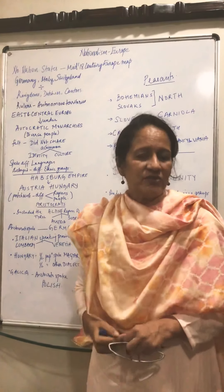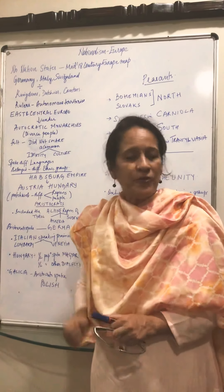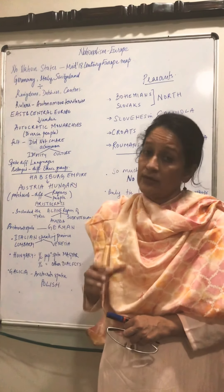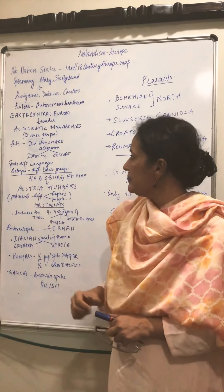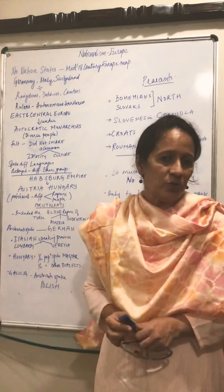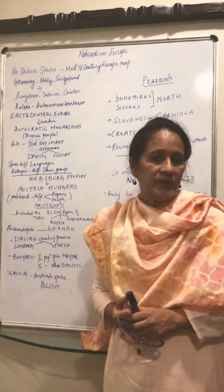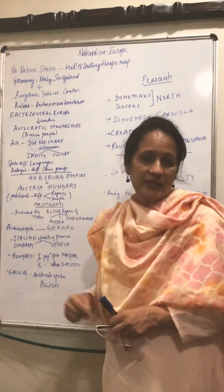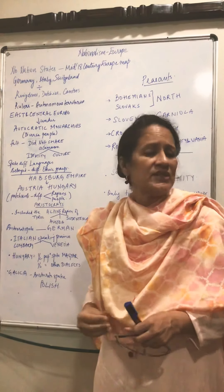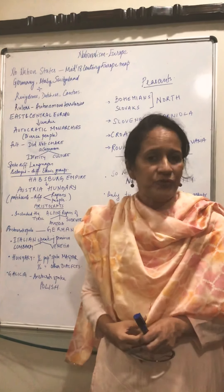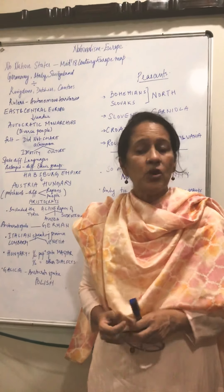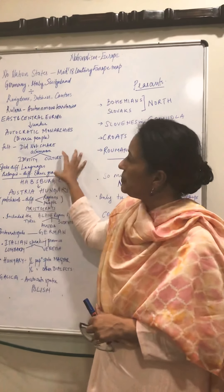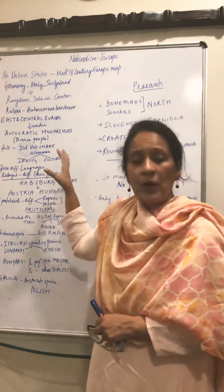Autocratic means very despotic and authoritative - rulers who suppressed the people and did not give them freedoms. Many diverse people lived in East and Central Europe - different types of people who felt they did not share a common identity and culture. They didn't feel a sense of oneness; they spoke different languages and belonged to different ethnic groups. This would be your introduction.